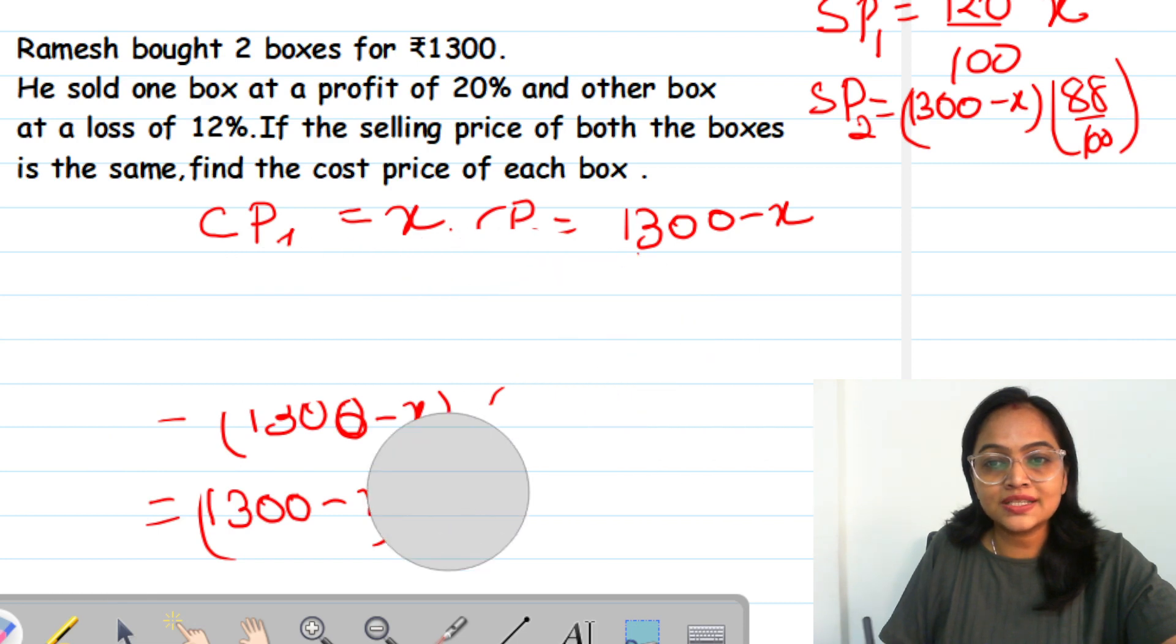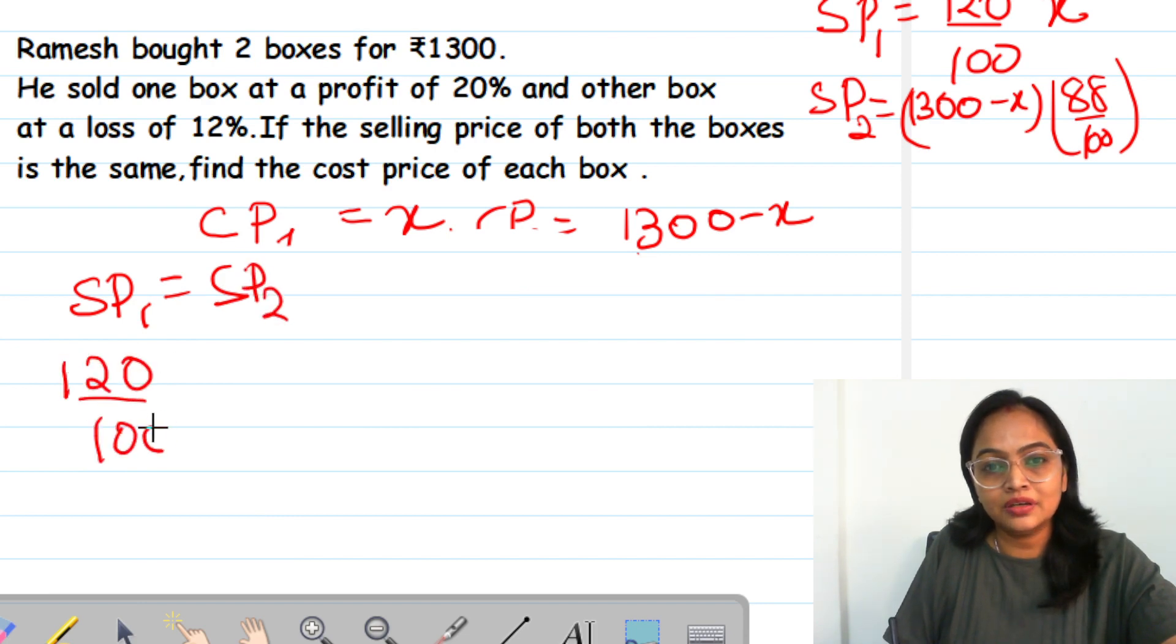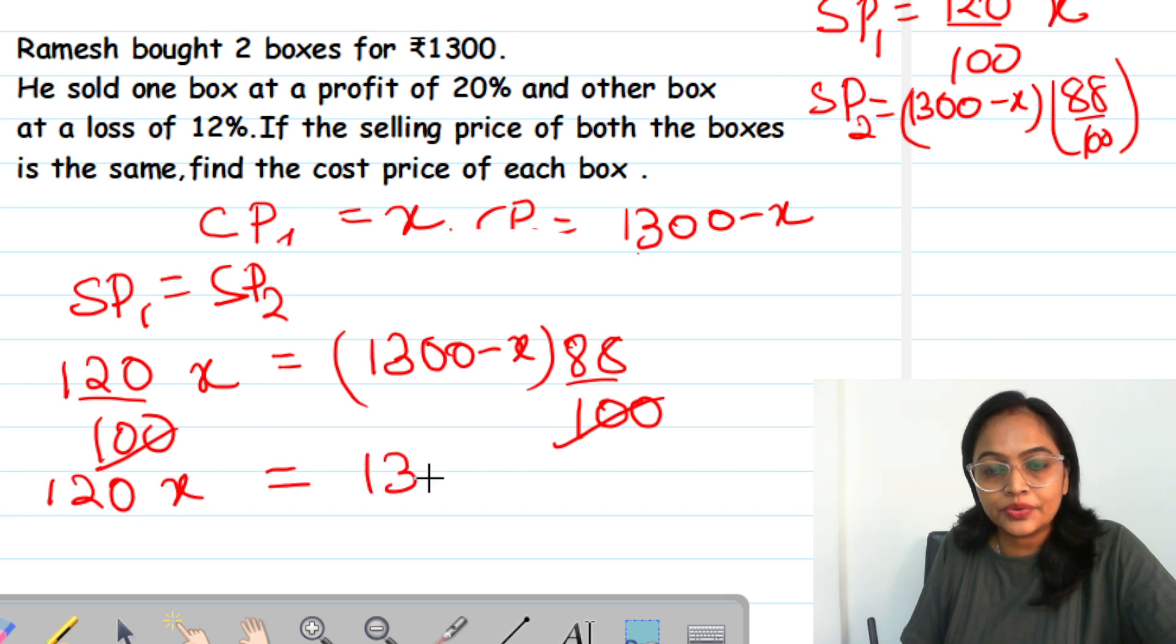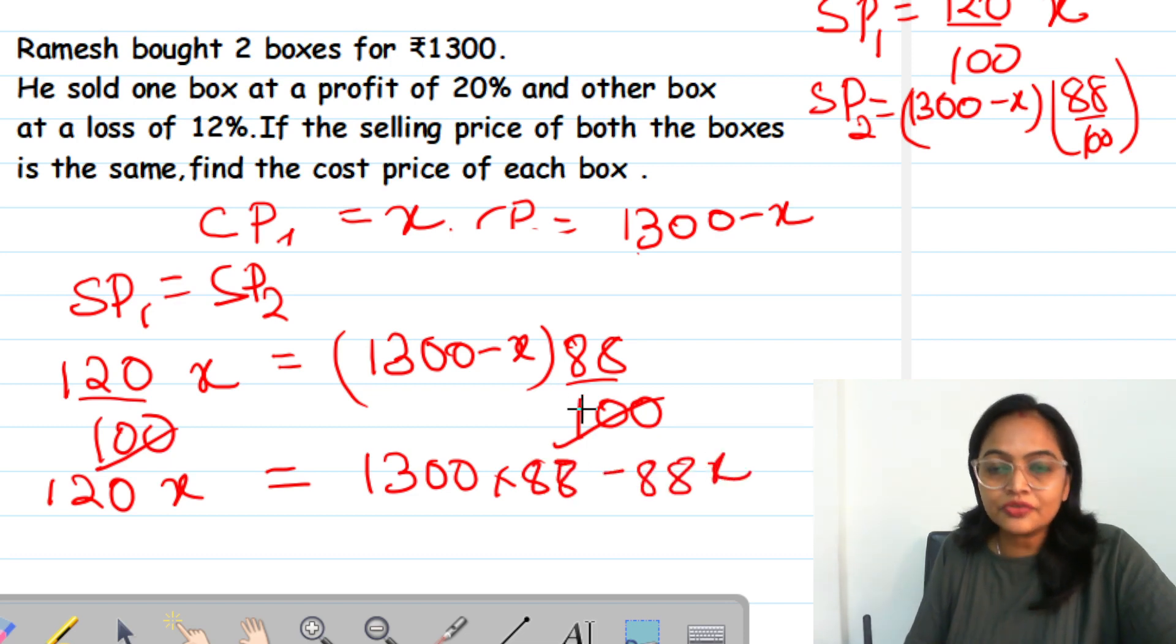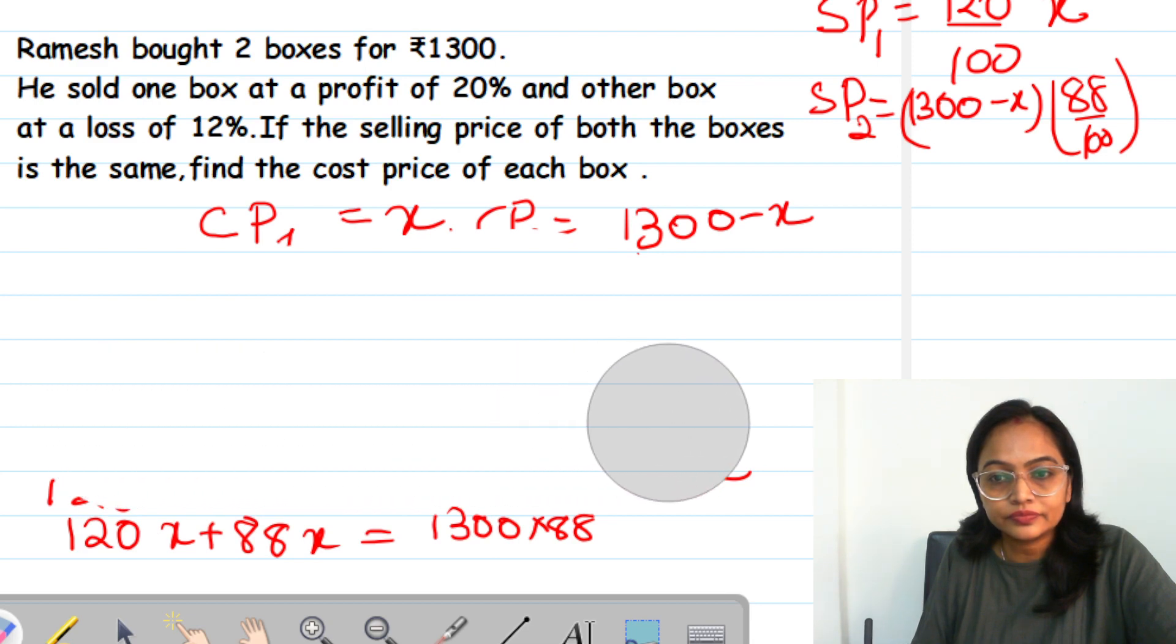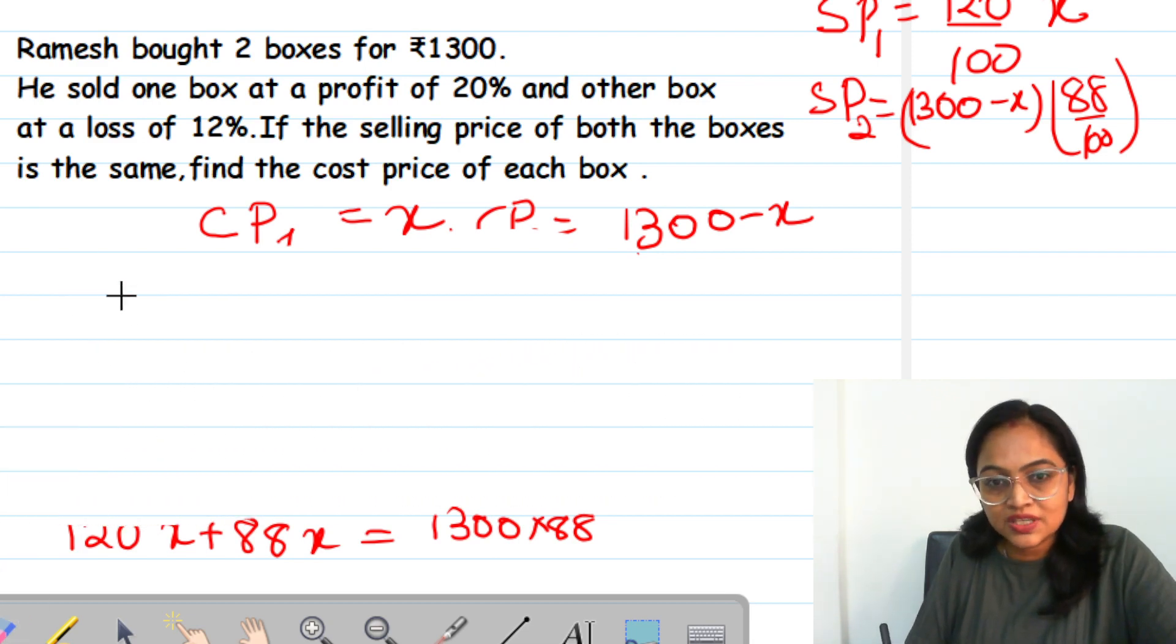Since SP1 equals SP2, 120X upon 100 equals 1300 minus X into 88 upon 100. We will cancel 100, so 120X equals 1300 into 88 minus 88X. So 120X plus 88X equals 1300 into 88. 208X equals 1300 into 88.